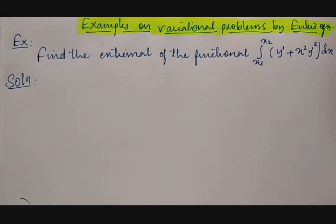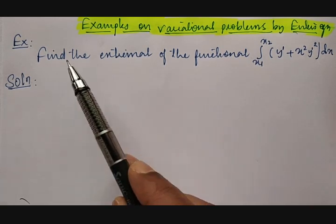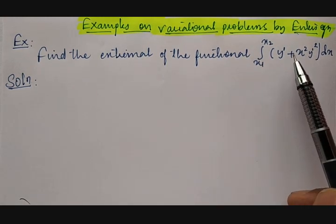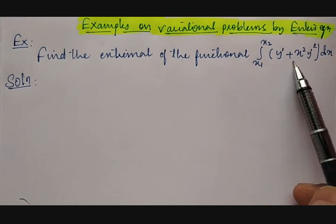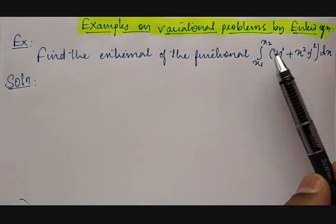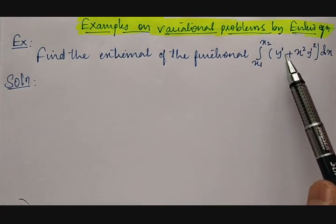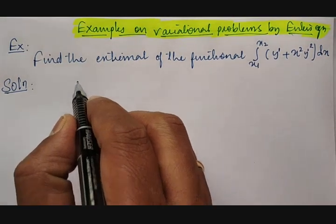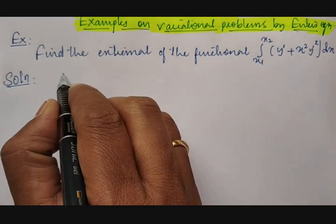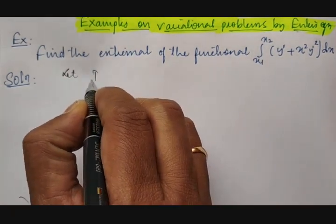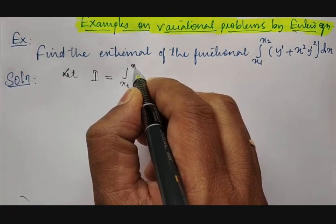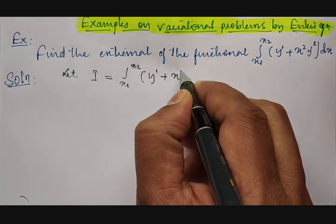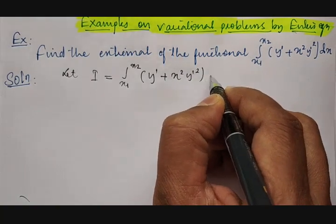As per Euler's equation, what is to be calculated? Find the extremal of the function: integration of y' plus x squared y' squared with respect to x, between x1 to x2. This is the example given — let I be equal to the integral from x1 to x2 of y' plus x squared y' squared with respect to x.